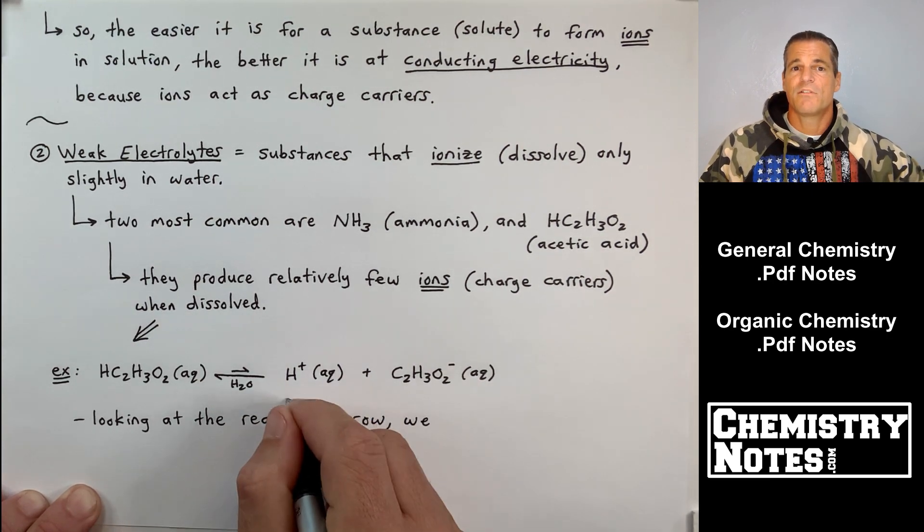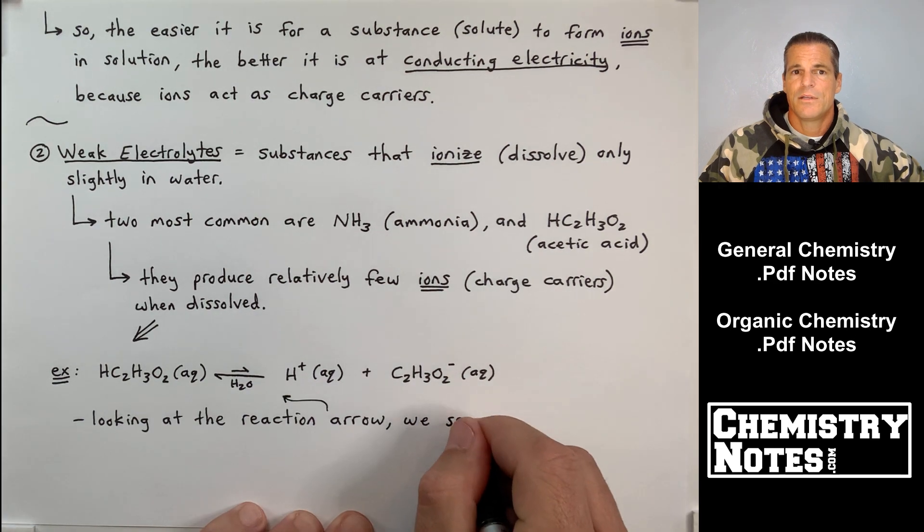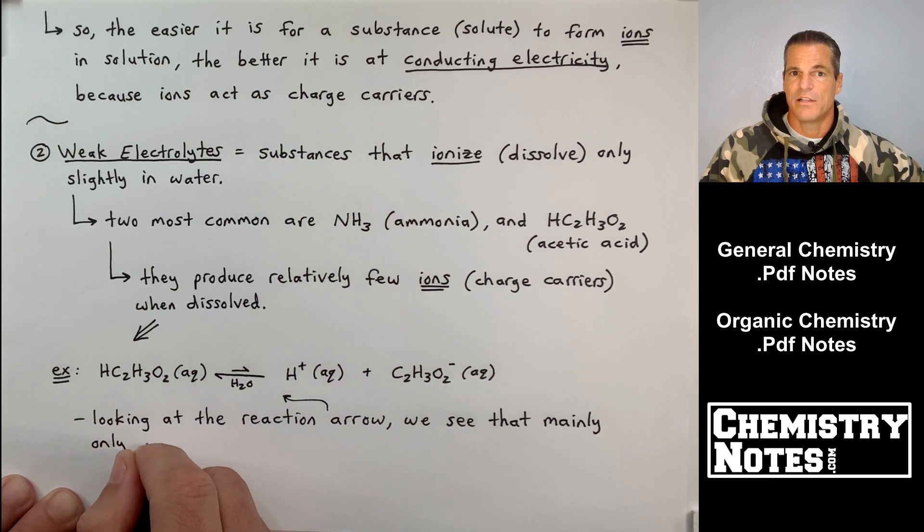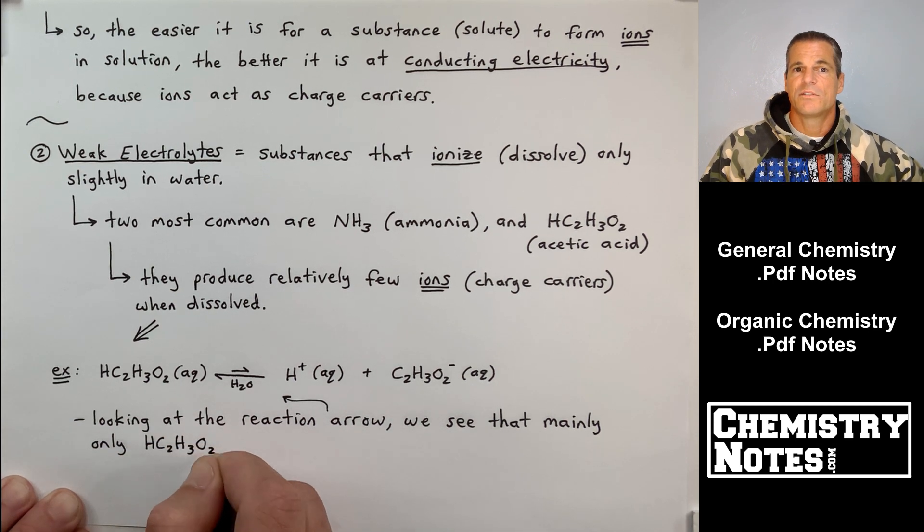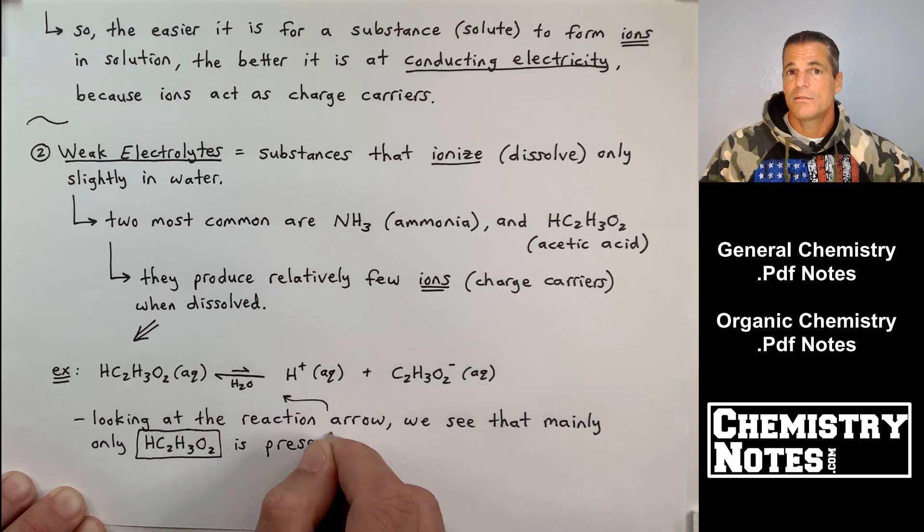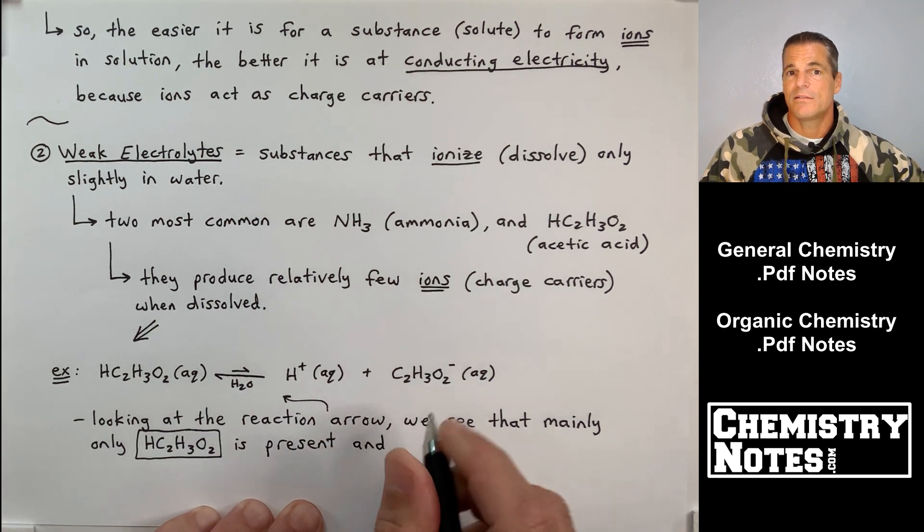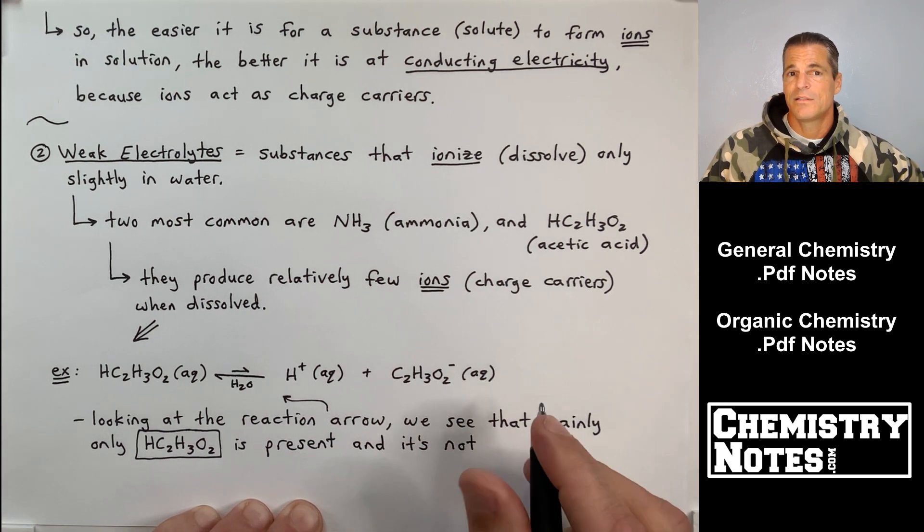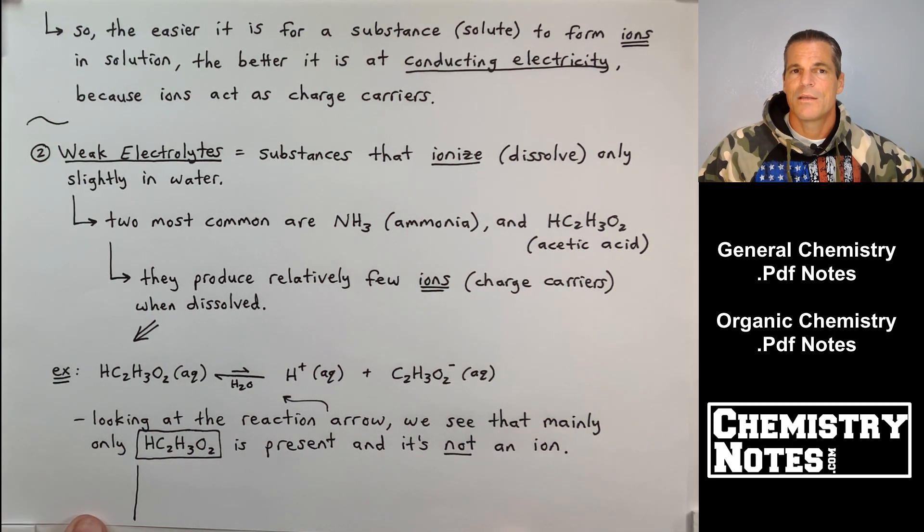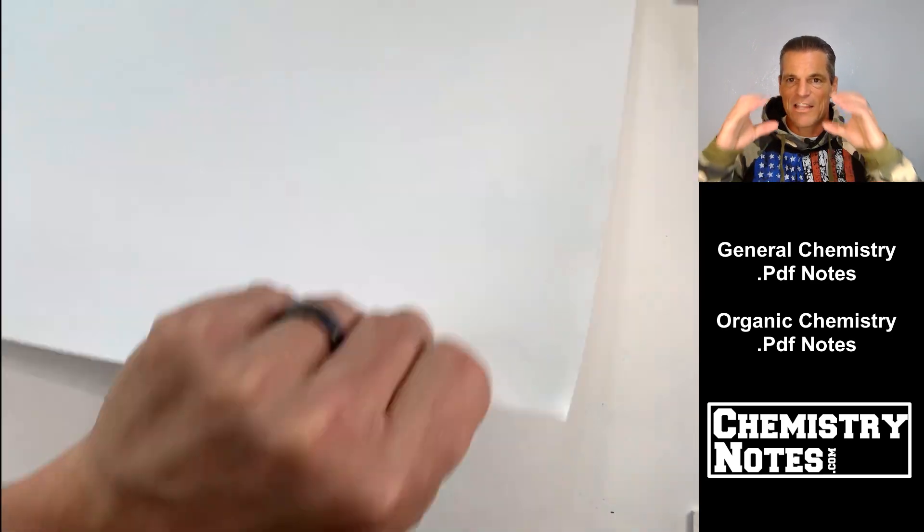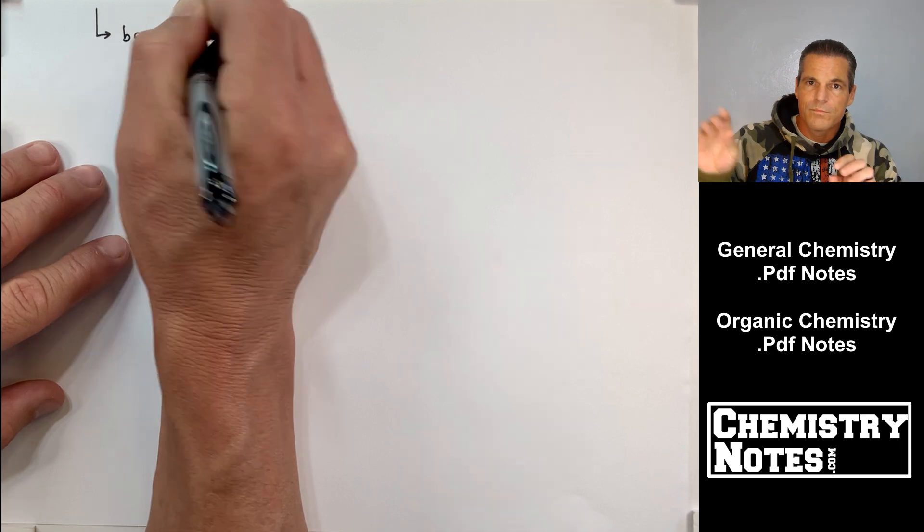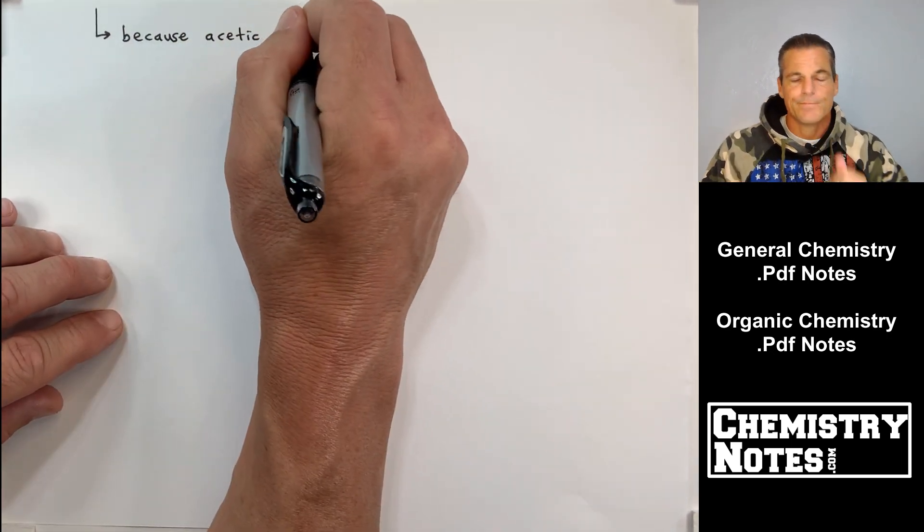They produce relatively few ions or charge carriers when dissolved. Take a look at the double-headed arrow there. Most of the reactant in the example lies towards the reactant. In the reactant, there's no ions on the left-hand side. So when dissolved in water, HC2H3O2 produces some H+ and some C2H3O2-, but not a lot. The reaction here mainly lies to the left, so it mainly stays together but a little bit of it ionizes.